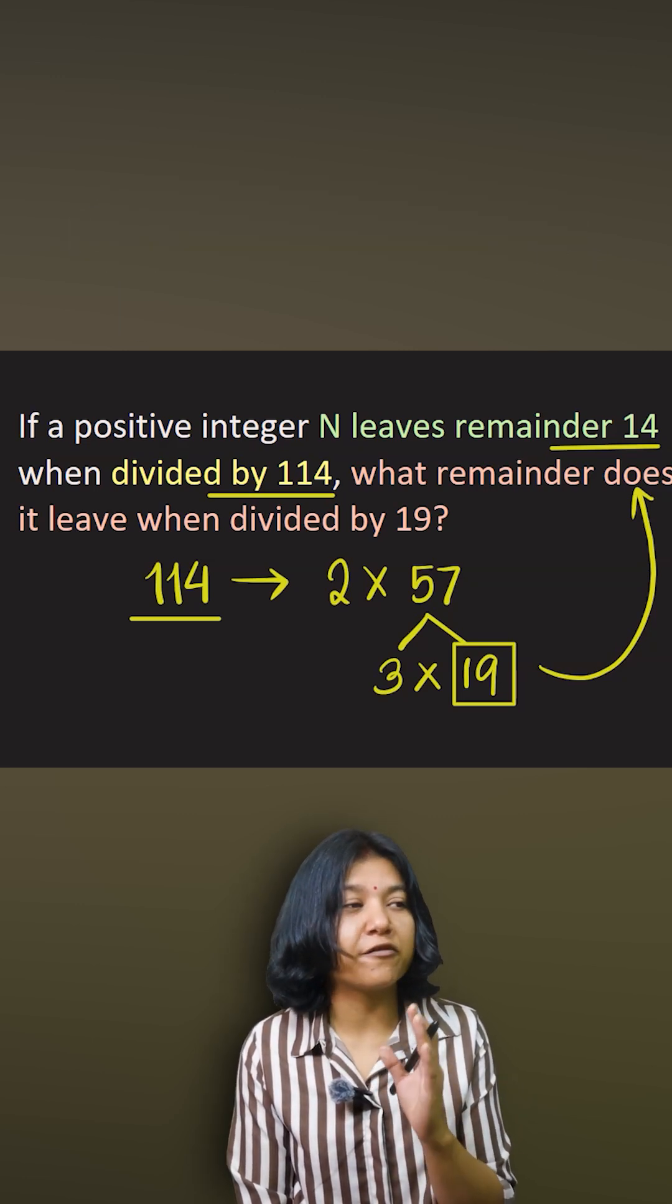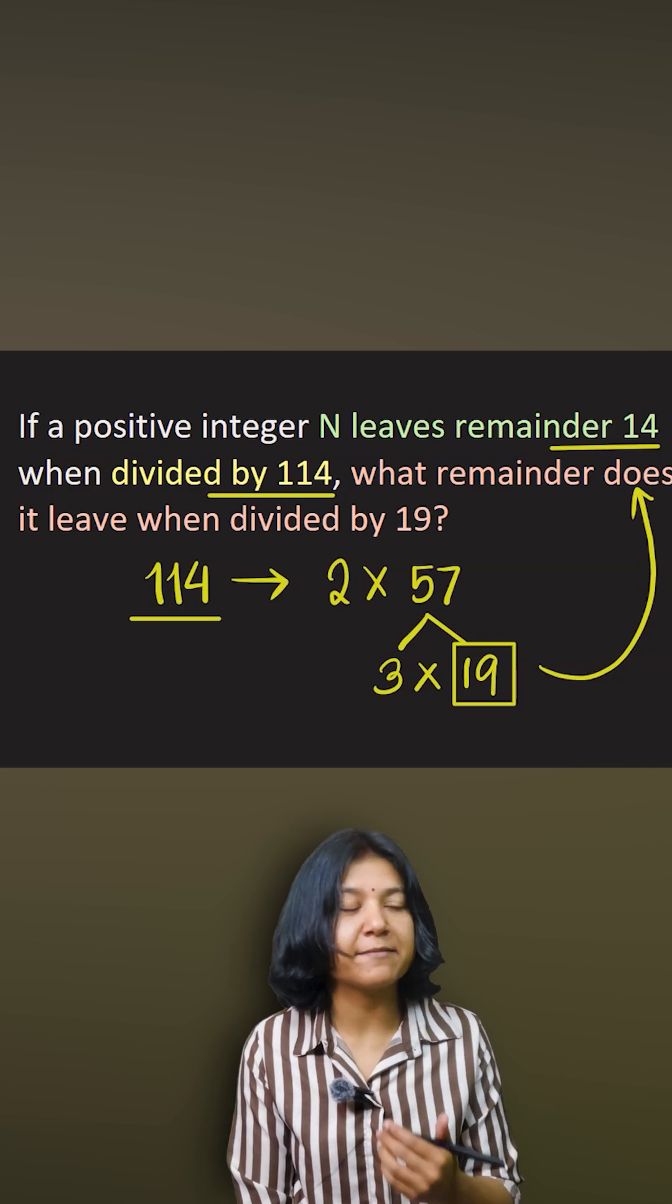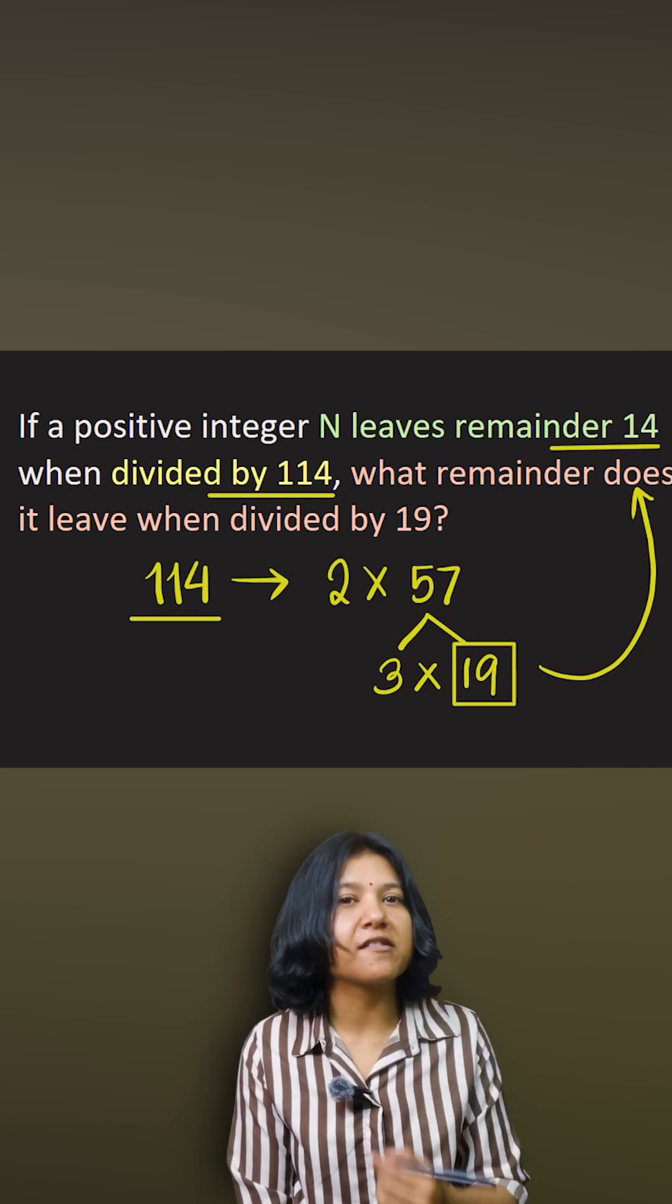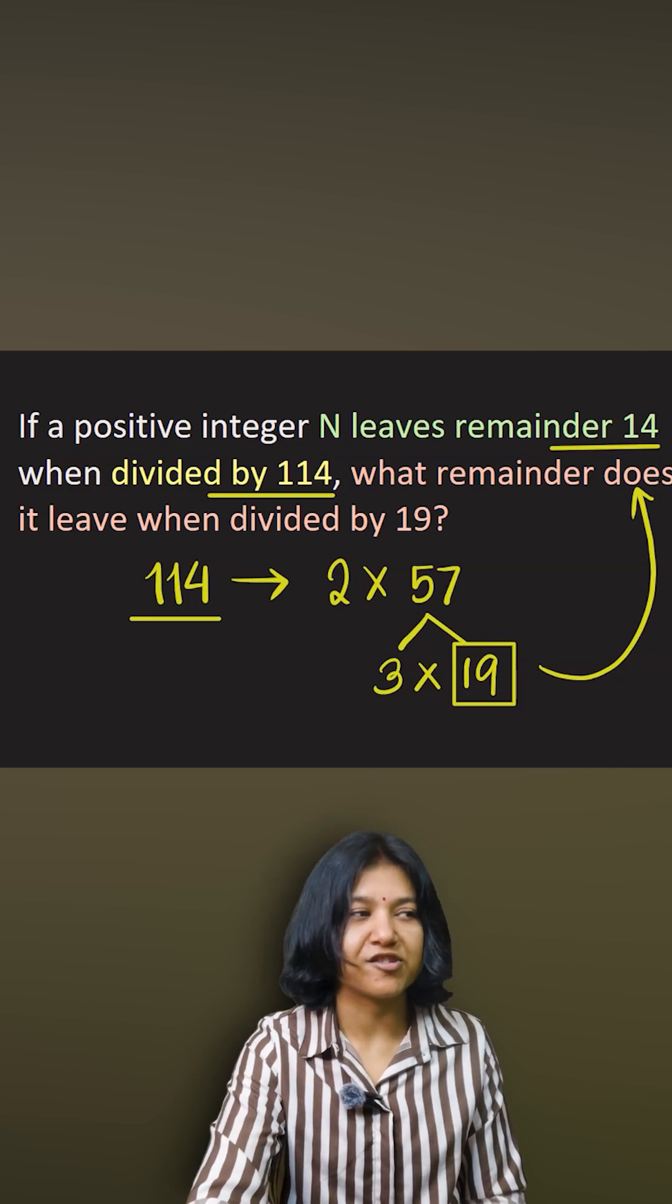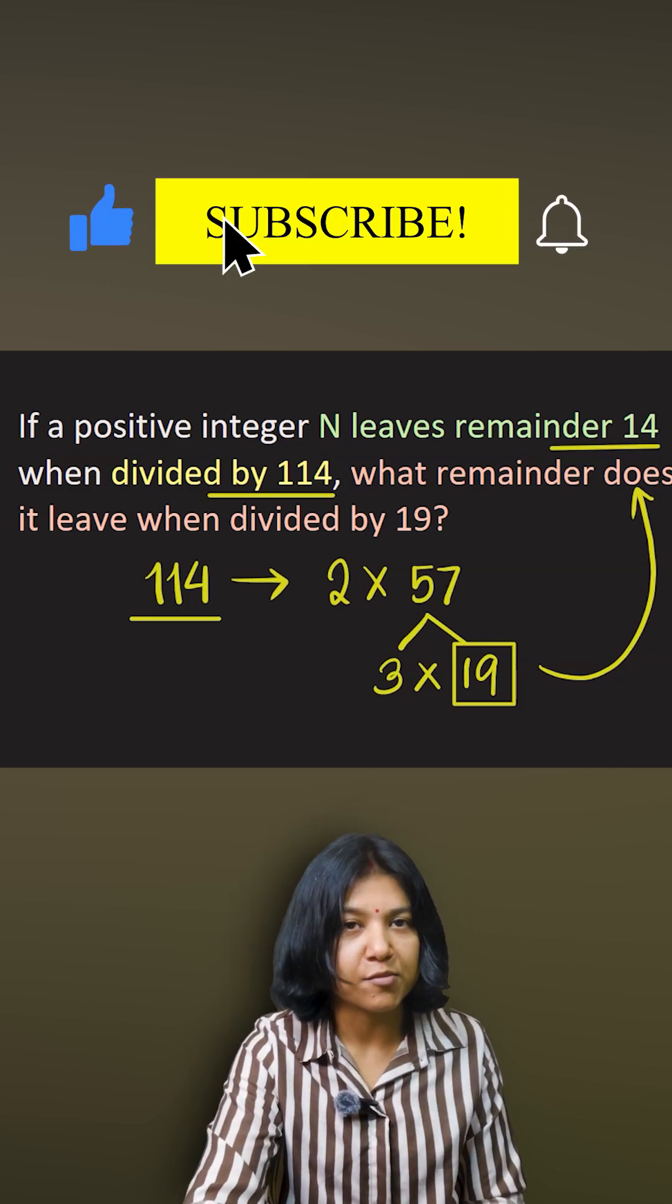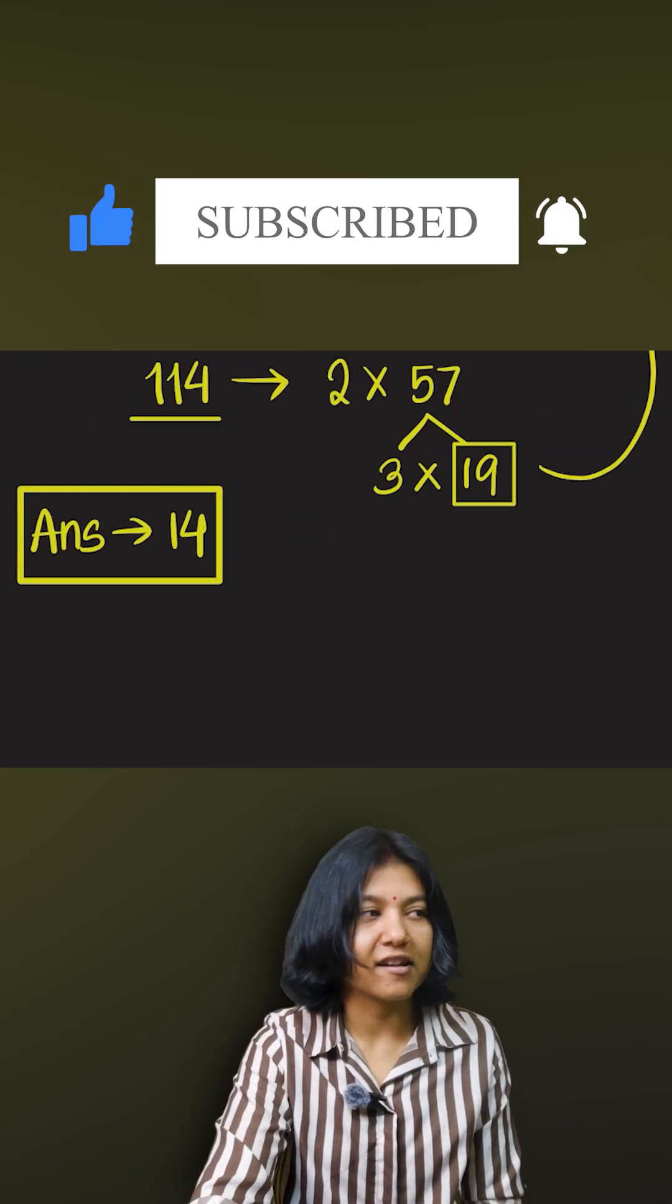Provided the value is less than 19, so hence the answer is just 14. It will leave the same remainder. That's it, I hope that made sense.